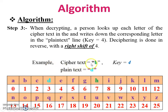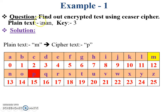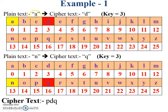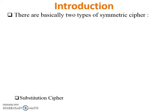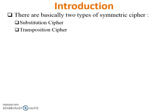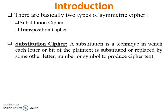When decrypting, a person looks up each letter of the ciphertext and writes down the corresponding letter in the plaintext. If the key is equal to 4, deciphering is done in reverse with a right shift of 4. For example, if the ciphertext is H and the key is 4, we shift right by 4 positions — 1, 2, 3, 4 — so the plaintext is D. This is the reverse decryption process.